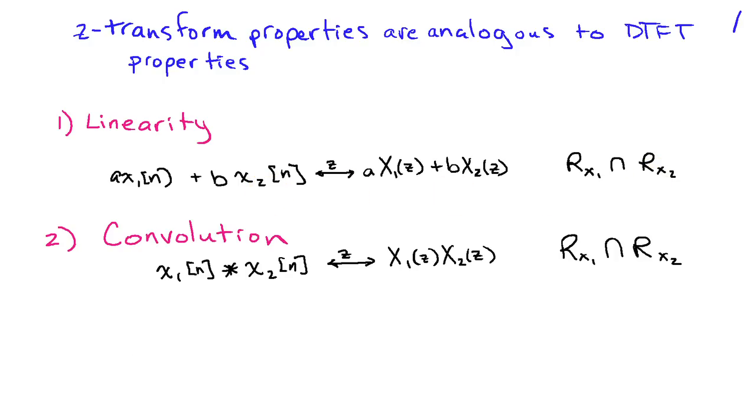The convolution property is also similar to the discrete-time Fourier transform. If I have a convolution of X1 and X2, the Z-transform is just the product of the Z-transforms of the individual signals. So the Z-transform also converts convolution in the time domain to multiplication in the Z-domain. The region of convergence again involves the intersection of the two Z-transforms because for this product to be defined, the Z-transforms have to exist at values of Z corresponding to both functions.